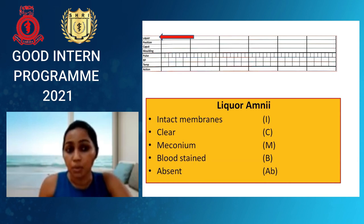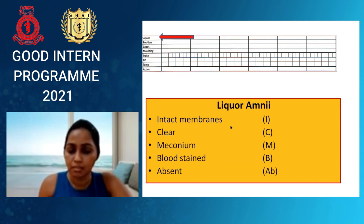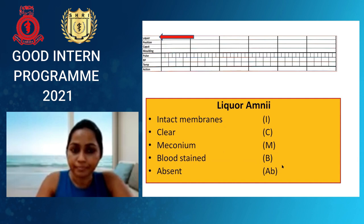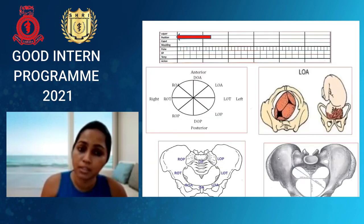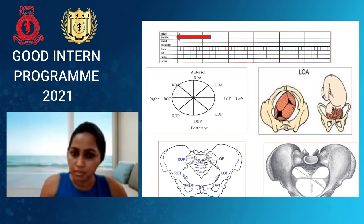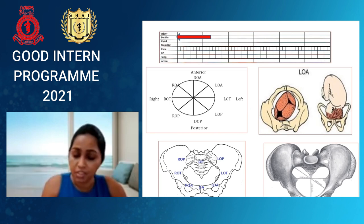Liquor should be documented using single letters: I for intact membranes, C for clear liquor, M for meconium, B for bloodstained, and AB for absent. Position of the fetal head is also recorded here — very important but difficult to appreciate for new interns. Most of the time the baby's head is in the left occipital anterior position, but the most preferred position is occipital anterior.